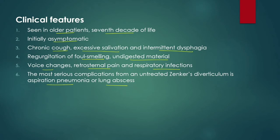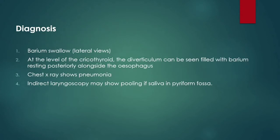Patients can present with pain, dysphagia, recurrent respiratory infection, and swelling in the neck. How will you diagnose Zenker's diverticulum? We can do a barium swallow. Usually on lateral view, we can see the protrusion and the pouch-like structure. At the level of the cricoid, the diverticulum can be seen filled with barium resting posteriorly alongside the esophagus. Chest X-ray shows pneumonia. Indirect laryngoscopy may show pooling of saliva in the pyriform fossa.